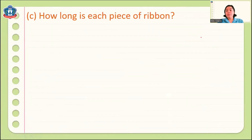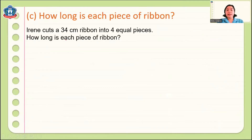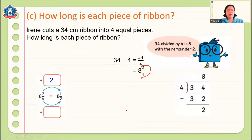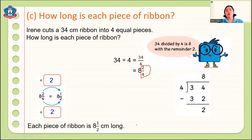Here is another problem: How long is each piece of ribbon? Irene cuts a 34-centimeter ribbon into four equal pieces. We divide 34 by 4 and get 8 and 2/4. We can reduce 2/4 to simplest form by dividing by 2, giving us 8 and 1/2 centimeters. So each small piece is 8 and 1/2 centimeters long.